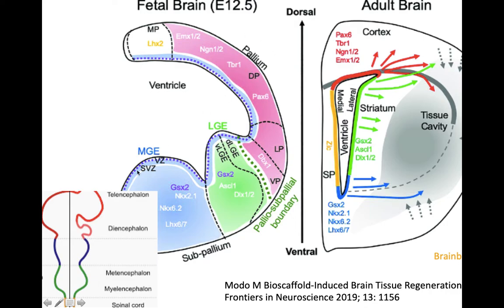Most people who have studied medicine know about the different brain vesicles, such as the diencephalon, the midbrain, and the telencephalon. Less well known is that the telencephalon divides into the pallium — from which the neocortex, olfactory cortex, and hippocampus are derived — and the subpallium, from which the basal ganglia are derived. The amygdala contains cells originating from both the subpallium and the pallium.